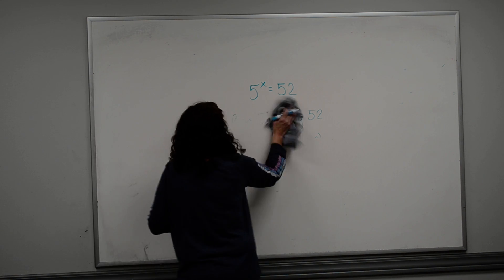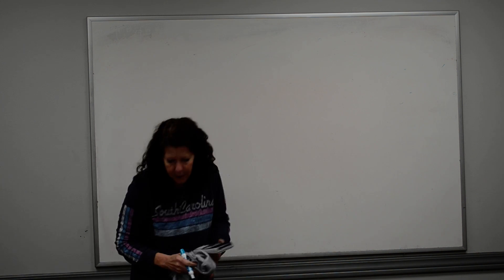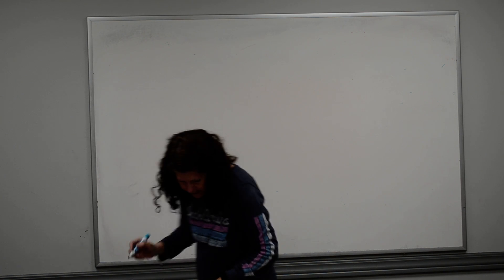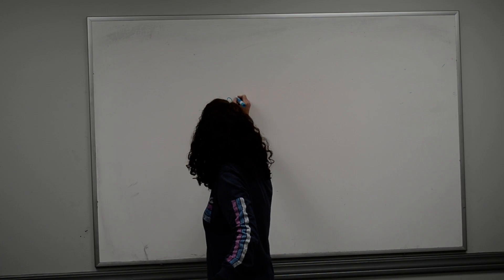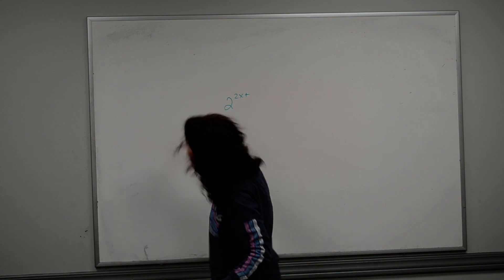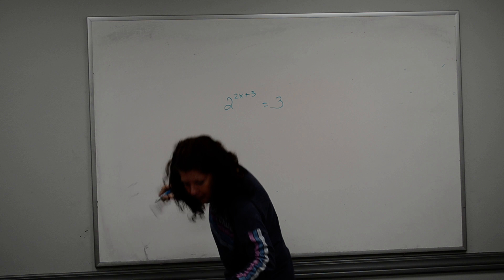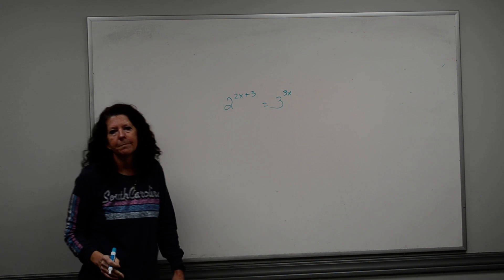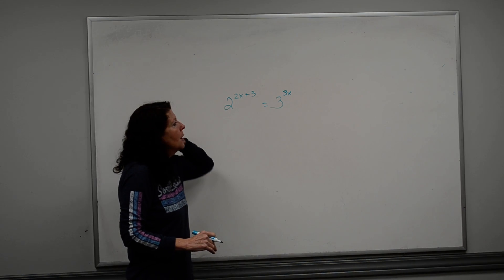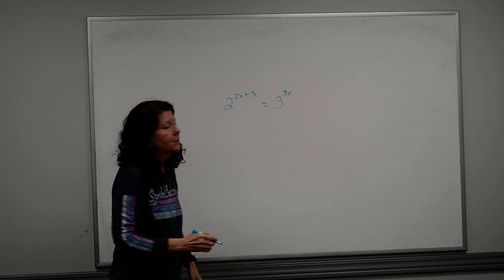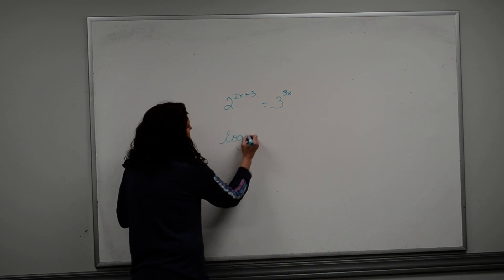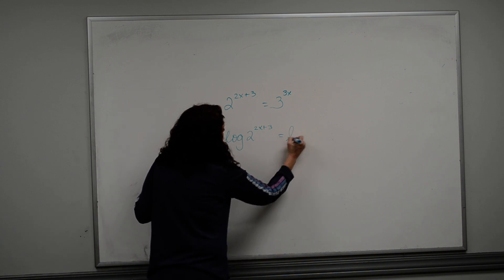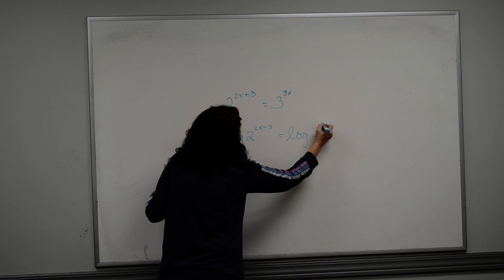All right, continuing on here, let's do one of those harder ones. Let's say I have 2 raised to the 2x plus 3 power is equal to 3 raised to the 3x power. Now again, I can't make my base numbers the same, which is what we did in the very first section. Can't do it, so therefore I'm going to have to take a log of both sides. So I take the log of 2 raised to the 2x plus 3 power equals the log of 3 raised to the 3x power.